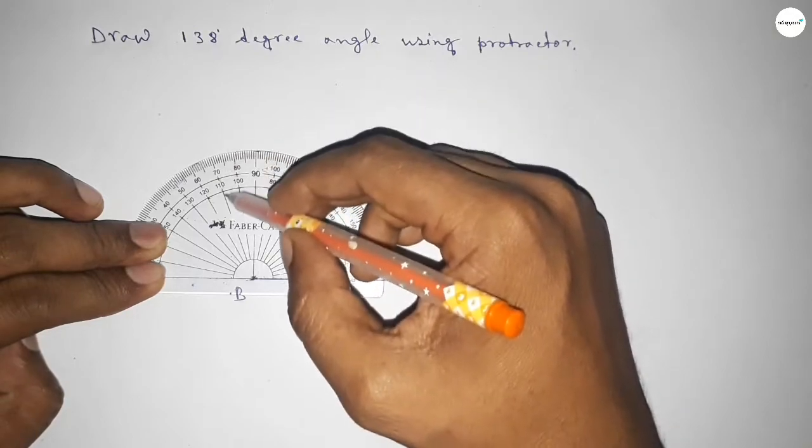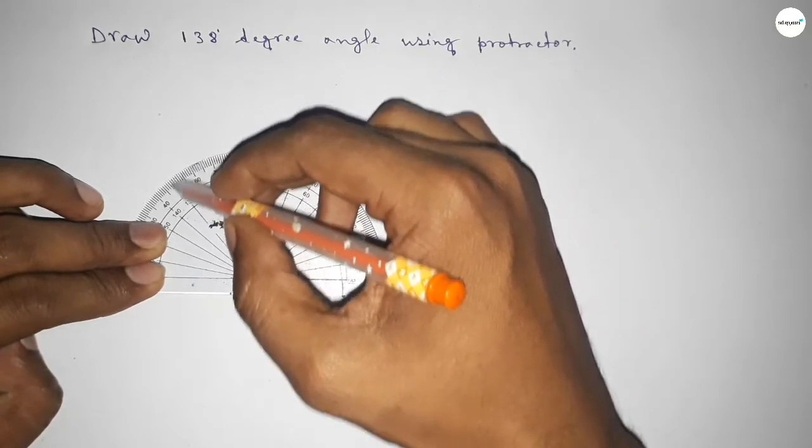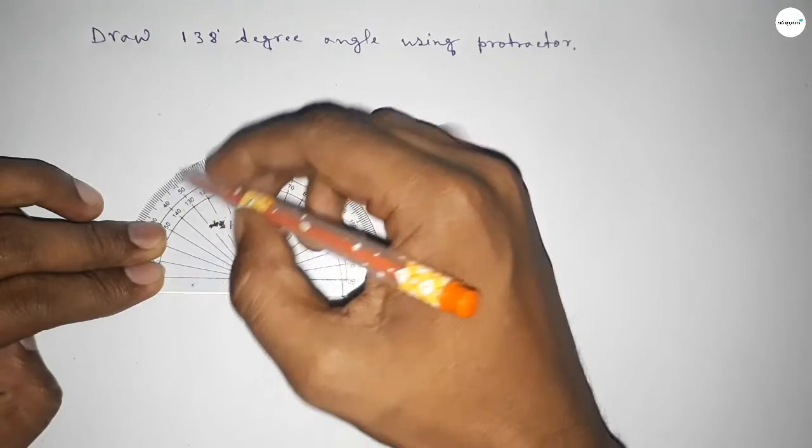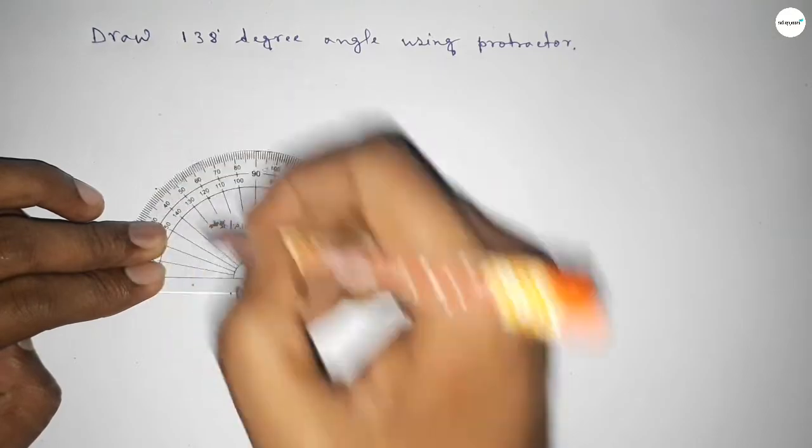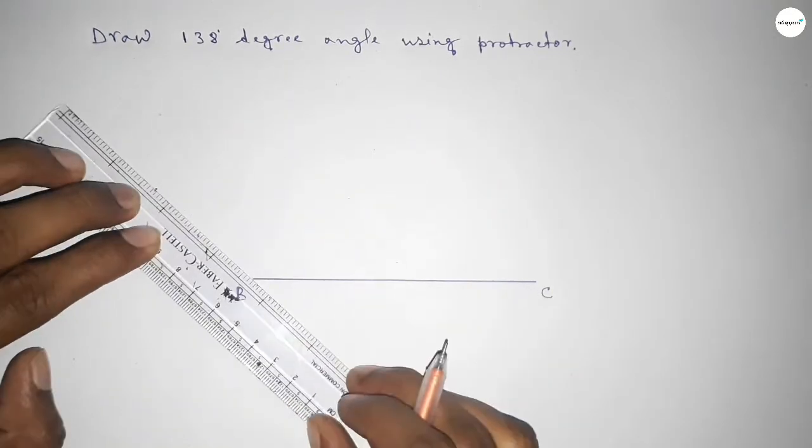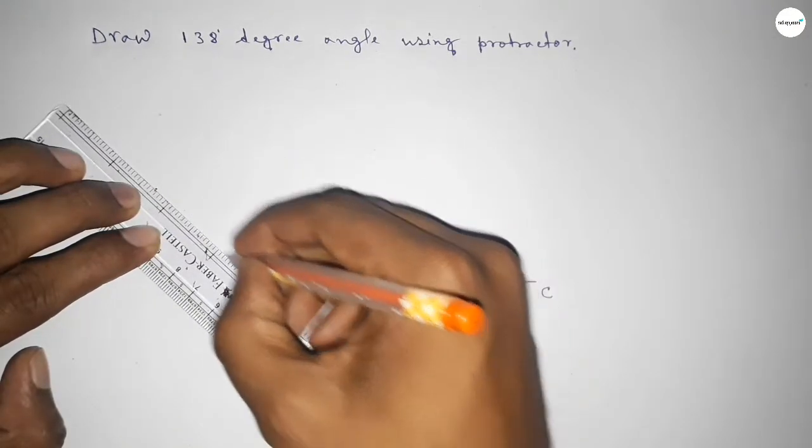90, 100, 110, 120, 130, 135, 136, 137, 138. So this is 138 degrees. So now joining this side to get 138 degree angle.